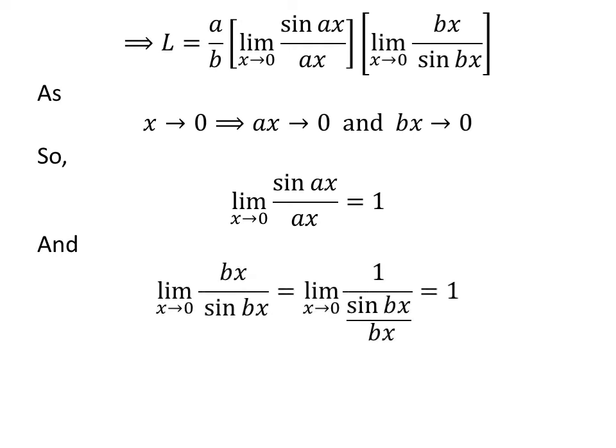As x approaches 0, a times x approaches 0 and b times x approaches 0. This implies the limit of sin of a times x upon a times x as x approaches 0 is equal to 1, and the limit of b times x upon sin of b times x as x approaches 0 is equal to 1.